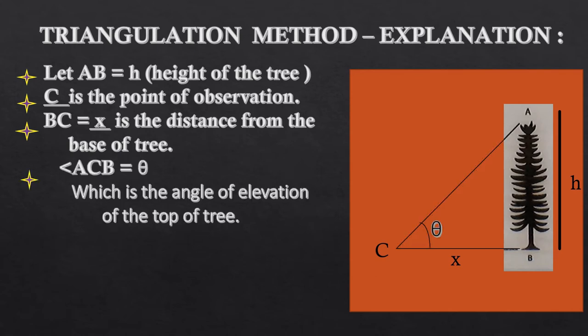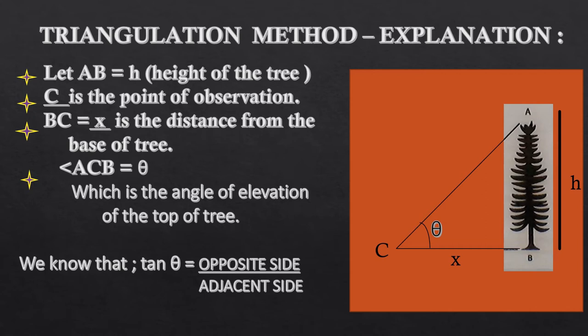Now the hypotenuse is drawn AC and the angle between ACB is taken as theta, which is the angle of elevation of the top of the tree. As we already know, tan theta equals opposite side over adjacent side.